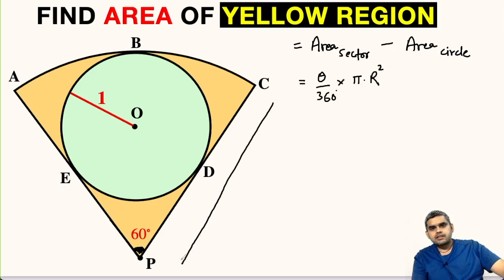Let us take this radius as R and area of the small circle will be pi times the square of its radius. Let us take this as r which is already given to us as 1 unit. Theta is already given to us 60 degree and if we know the value of this capital R, we can compute the area of sector and hence we can find the area of this yellow region.